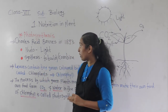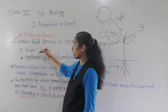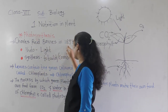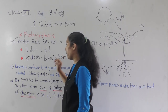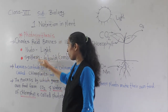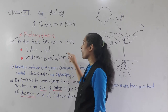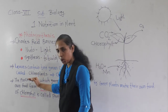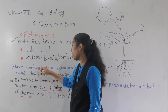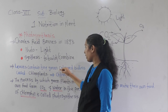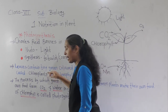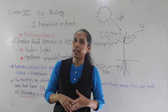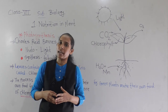Today we discussed photosynthesis. The term photosynthesis was discovered by Charles Barnes in 1893. Photo means light, synthesis means to build or to combine. Chlorophyll is present in chloroplasts — tiny green color bodies present in the leaves. We will discuss the next point in the next lecture. Thank you.